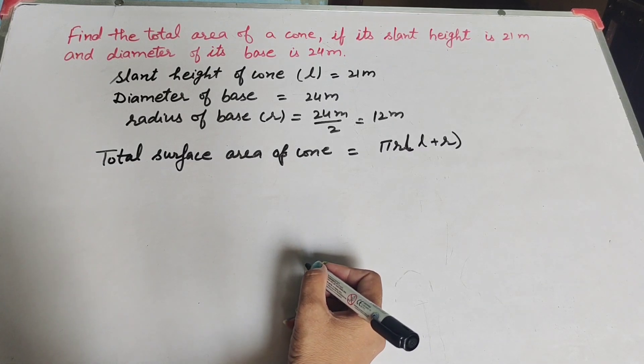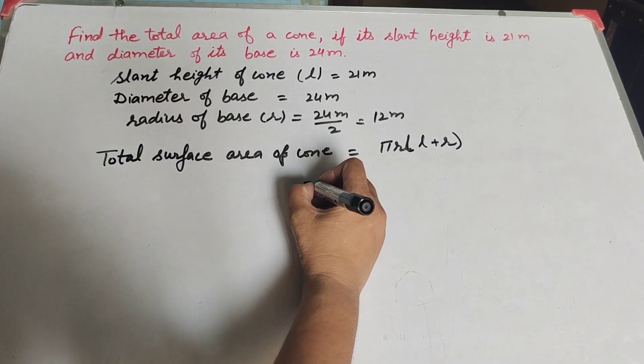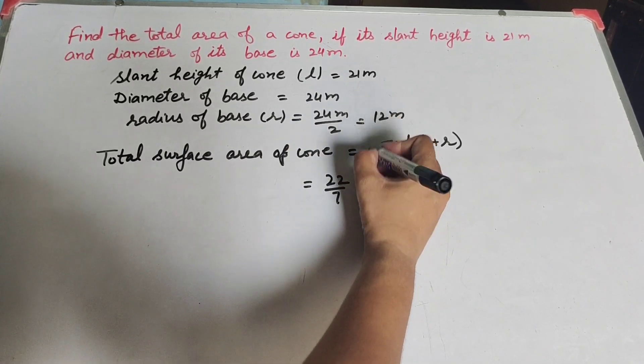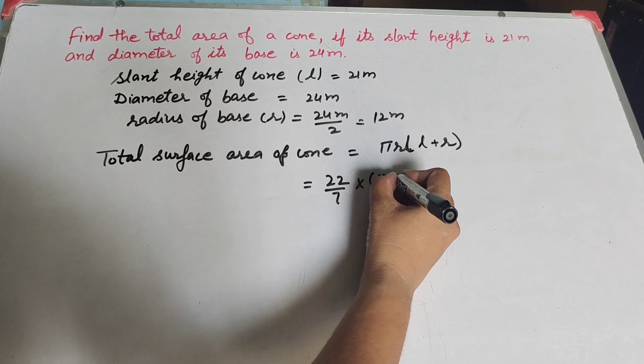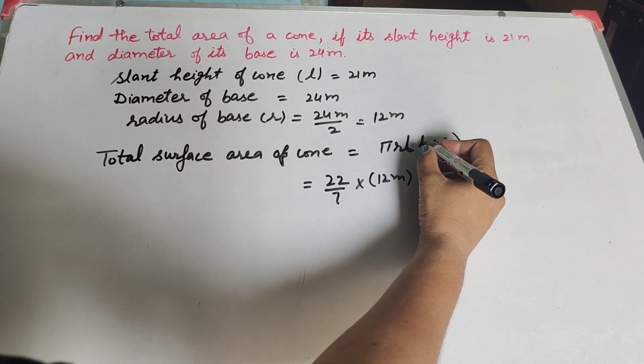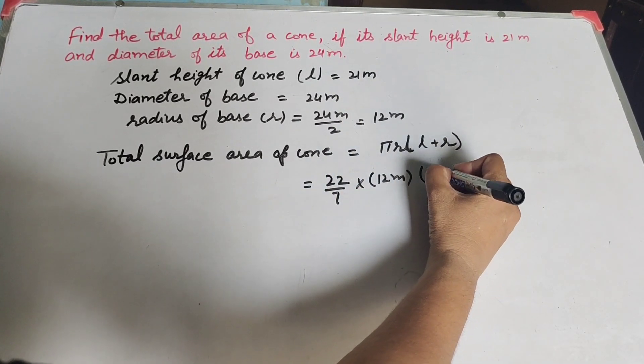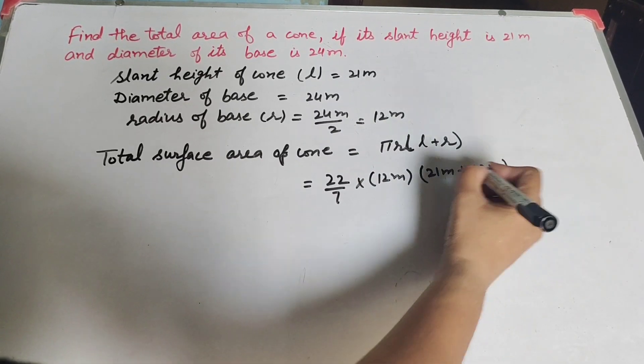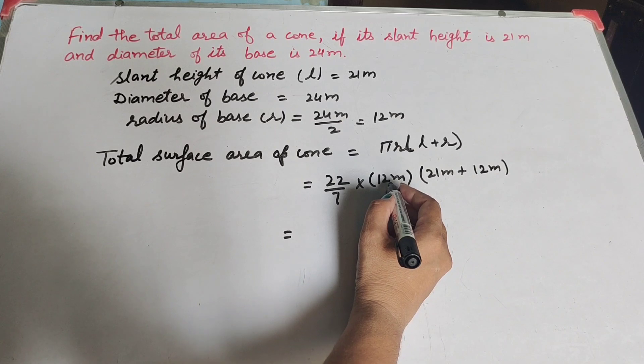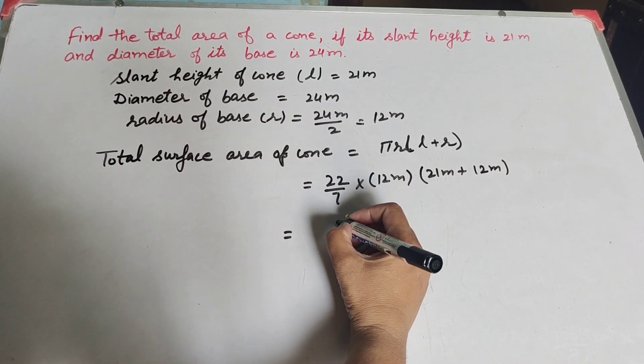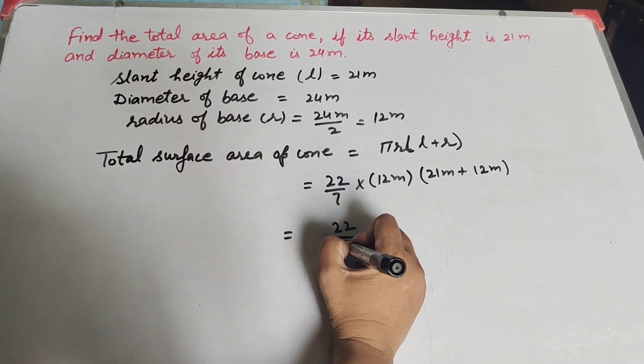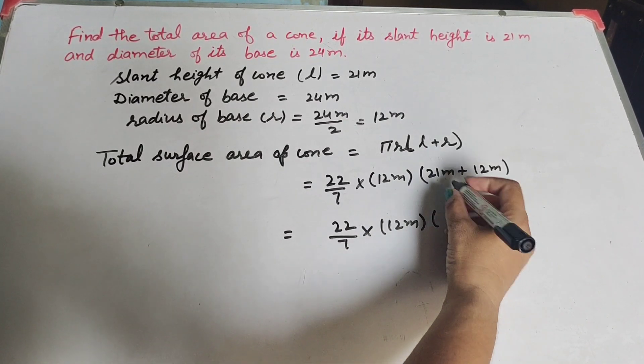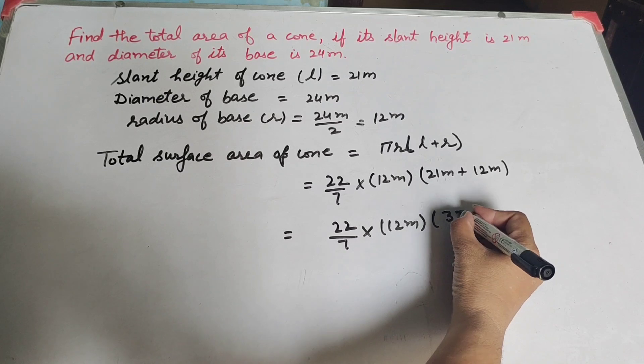So in this, pi its value is 22 over 7, r is radius that is 12 meters, into L, L is 21 meters, plus R, r is radius that is 12 meters. So there is 22 over 7 multiply by 12 meters into 21 meters plus 12 meters, it is 33 meters.